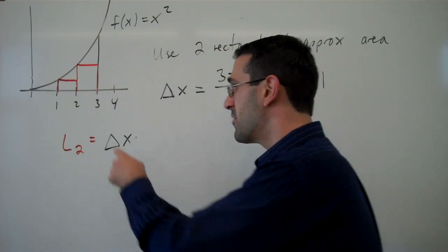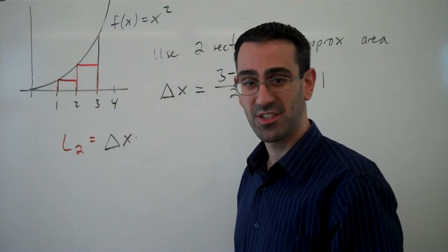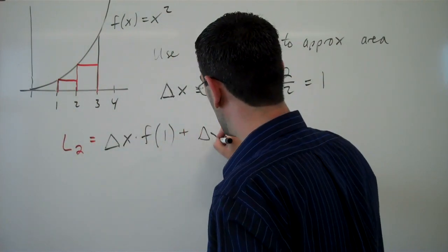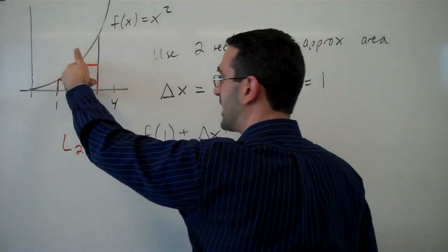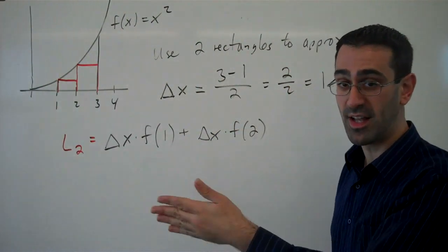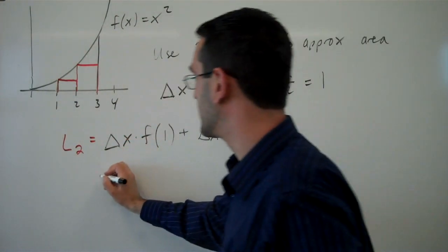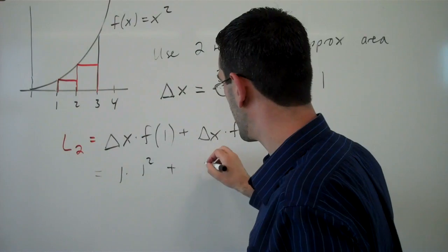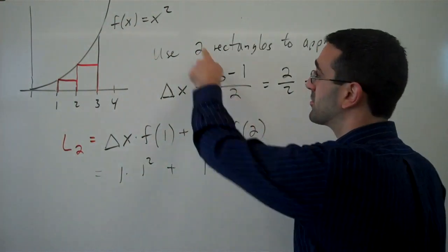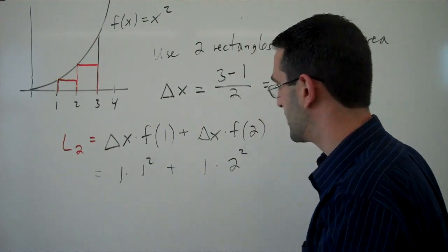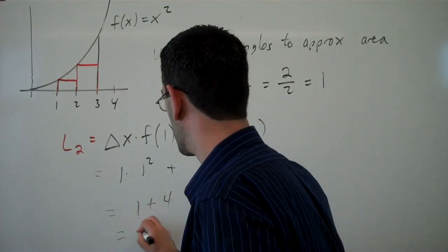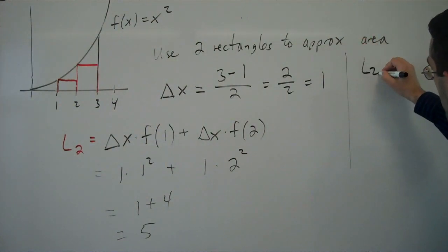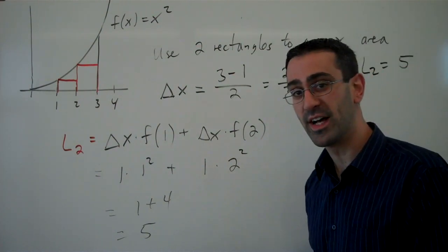How tall is each rectangle? For this first rectangle, we need to know the function value on the left side of the interval, so we need to know the function value at 1. For my second rectangle, it's going to be delta x wide again, and for the height I need the function value at 2, which is on the left side of that interval. Now I can evaluate: my delta x is 1, and f(1) equals 1 squared which is 1. My delta x is 1, and f(2) equals 2 squared which is 4. So I get 1 plus 4 is 5. Using my left endpoint approximation with two subdivisions gives me an approximation for the area of 5 units.